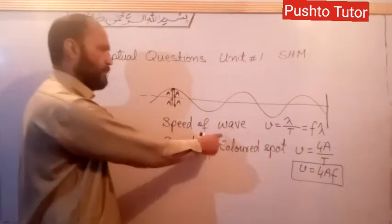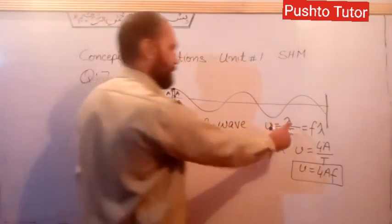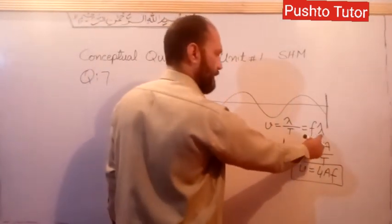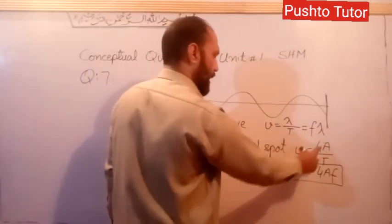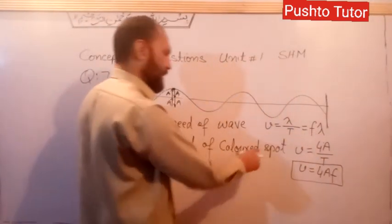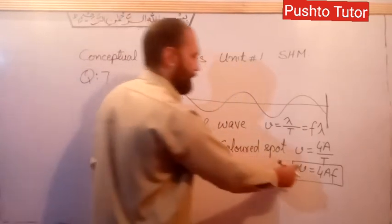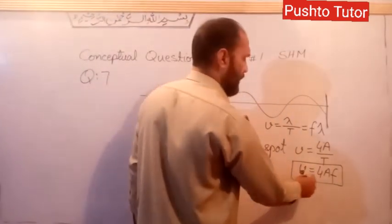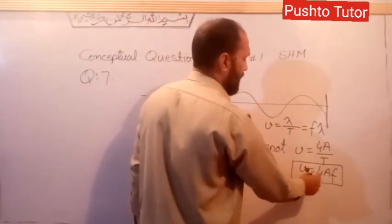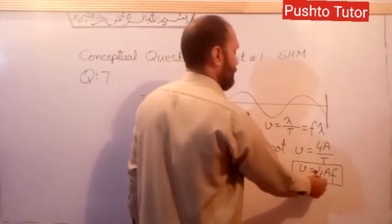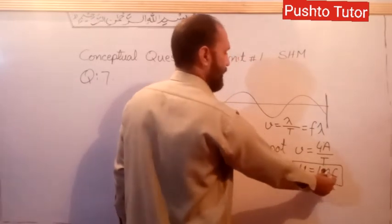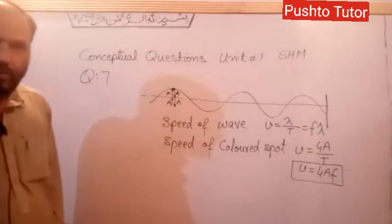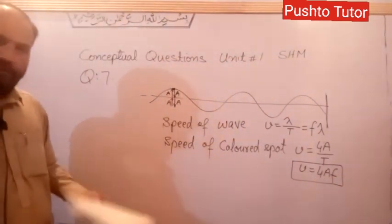The speed of the wave is given by the equation v = fλ. The speed of the colored spot is given by v = 4AF, where A is amplitude.